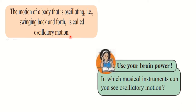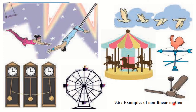The definition of oscillatory motion: the motion of a body swinging back and forth is called oscillatory motion. Many examples exist in daily life: the pendulum of a clock moves back and forth continuously; the wings of a bird show oscillatory motion; the needle of a sewing machine and the vibrating diaphragm of a tabla or drum also show oscillatory motion when struck.